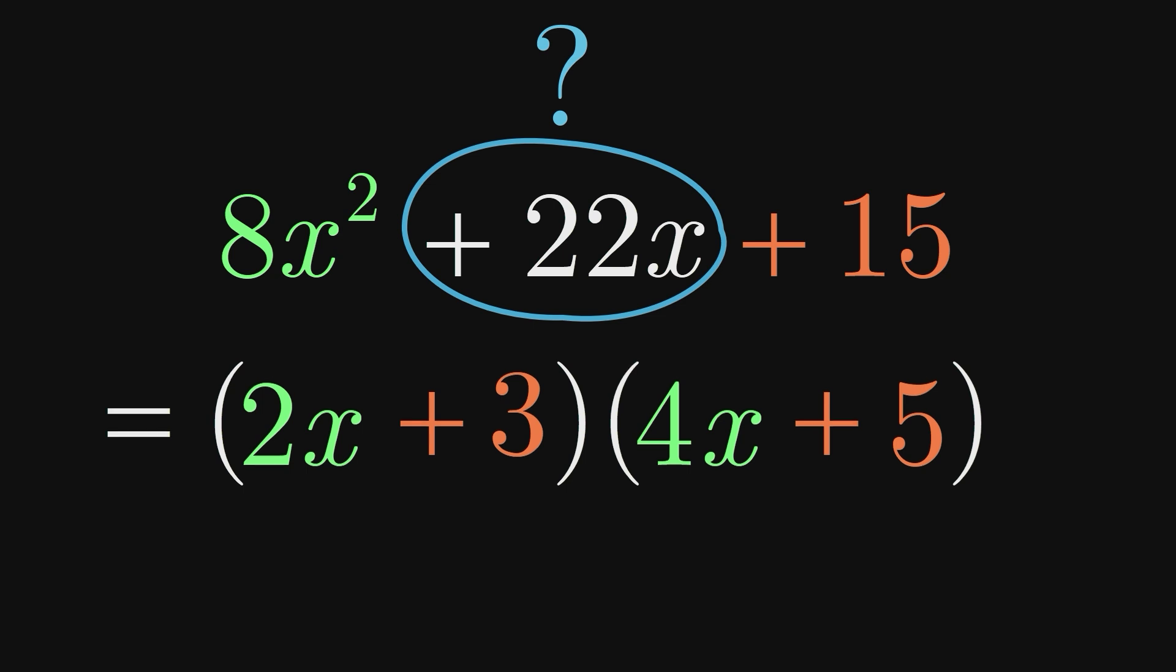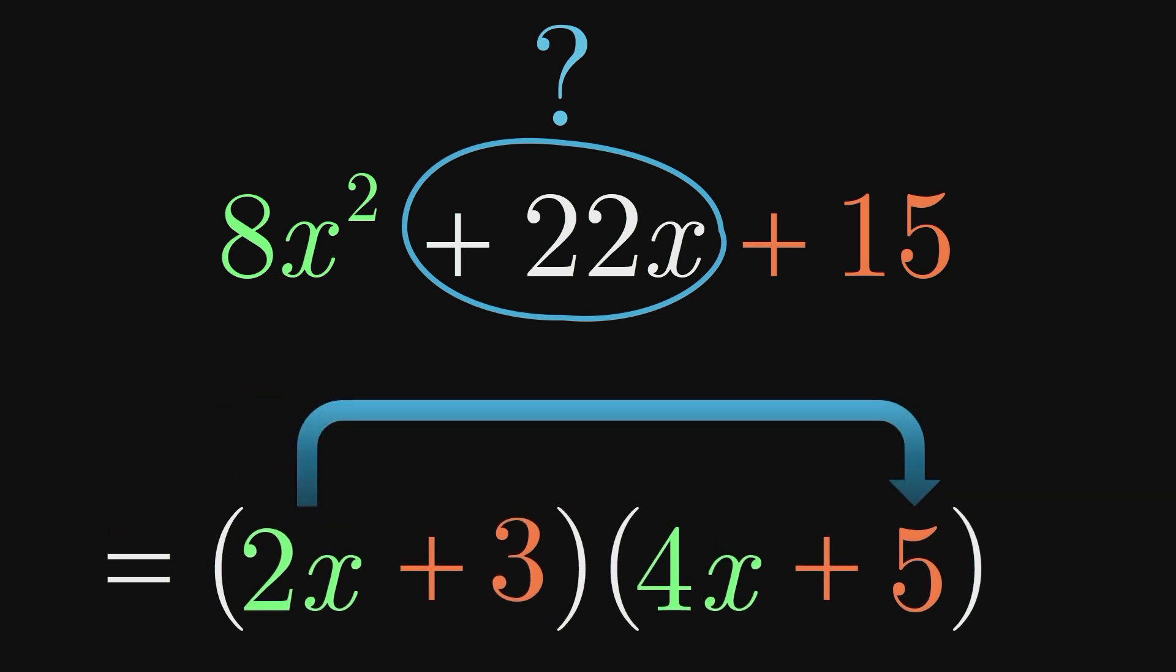It actually comes from two multiplications, 2x times 5, which is 10x, and 3 times 4x, which is 12x. Combine these like terms and we get our 22x.